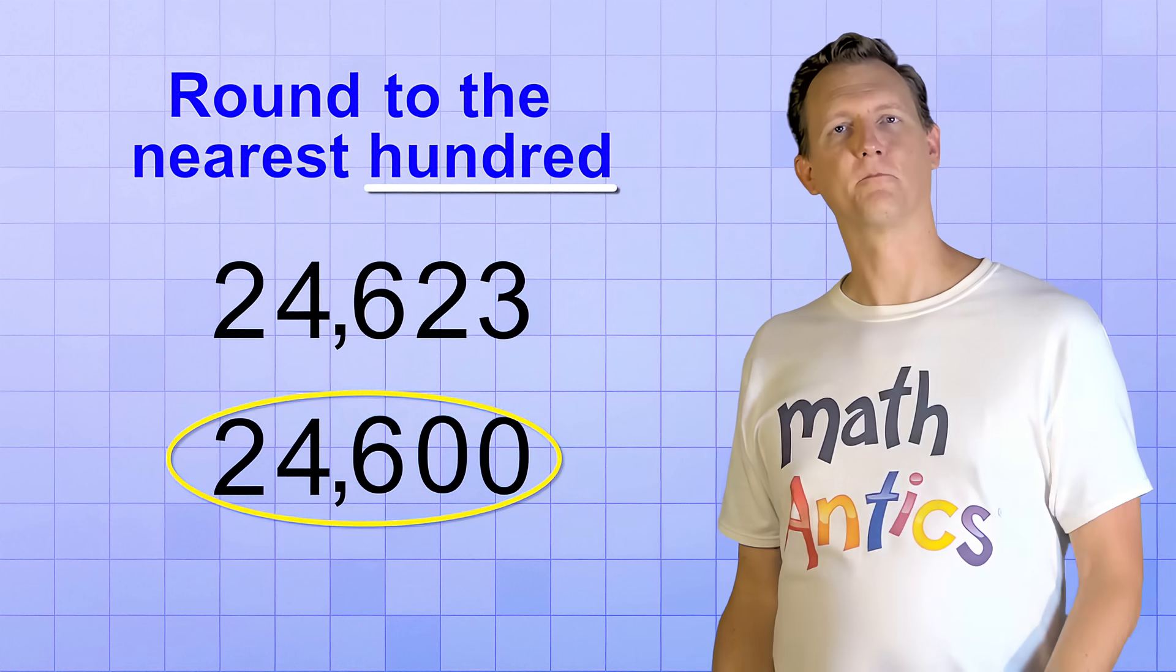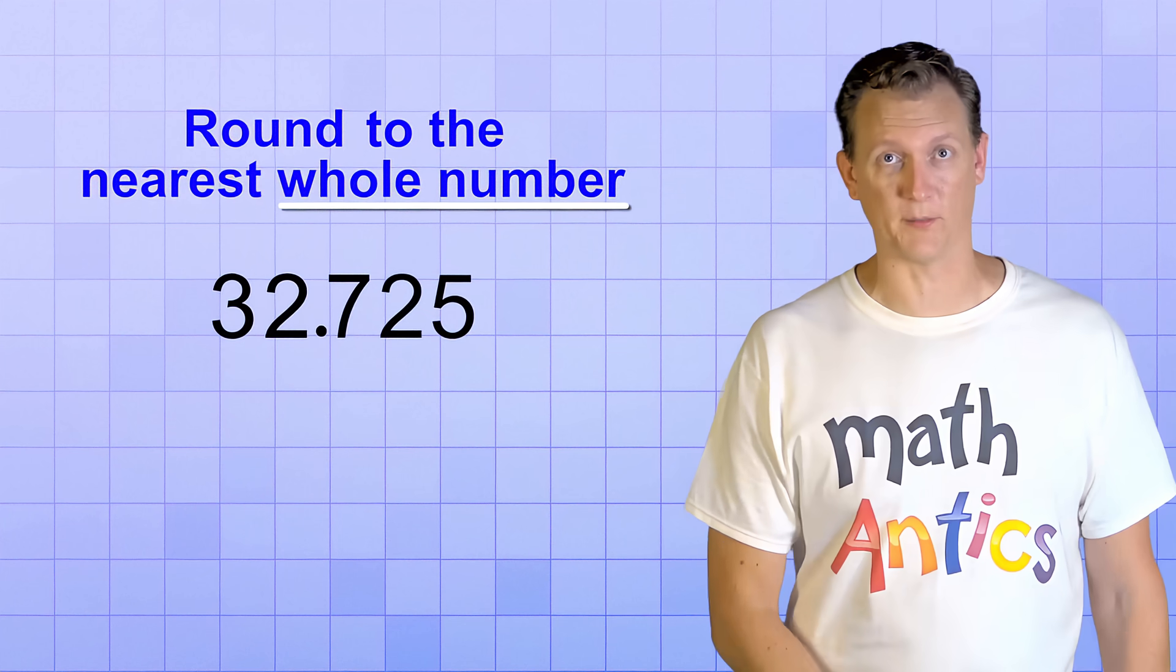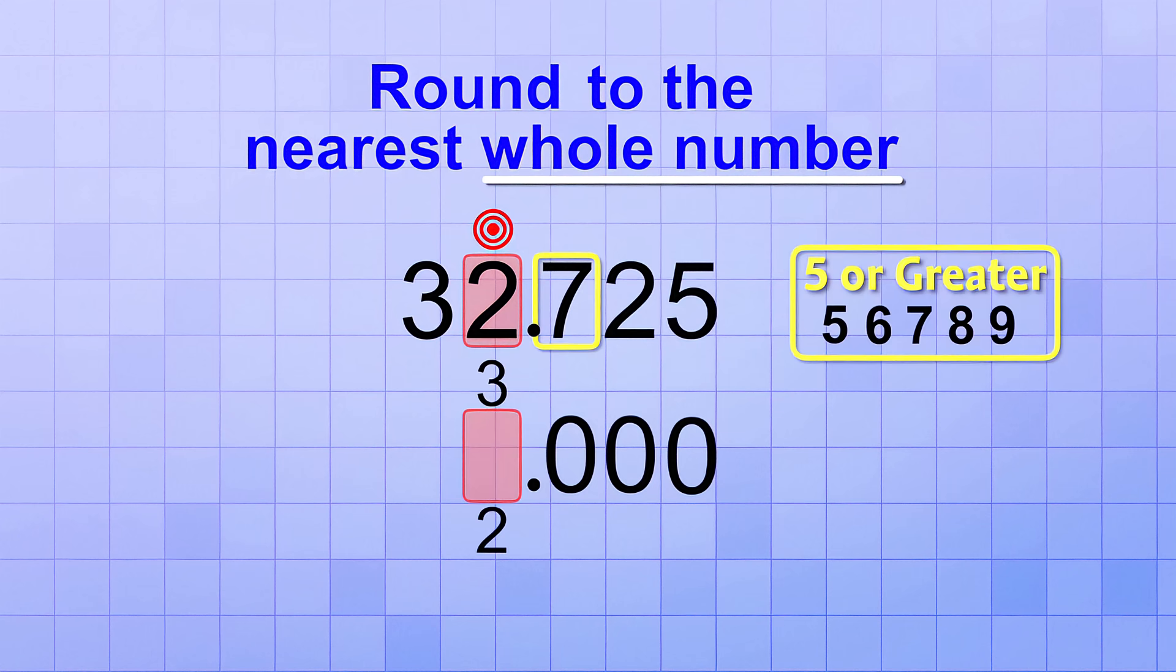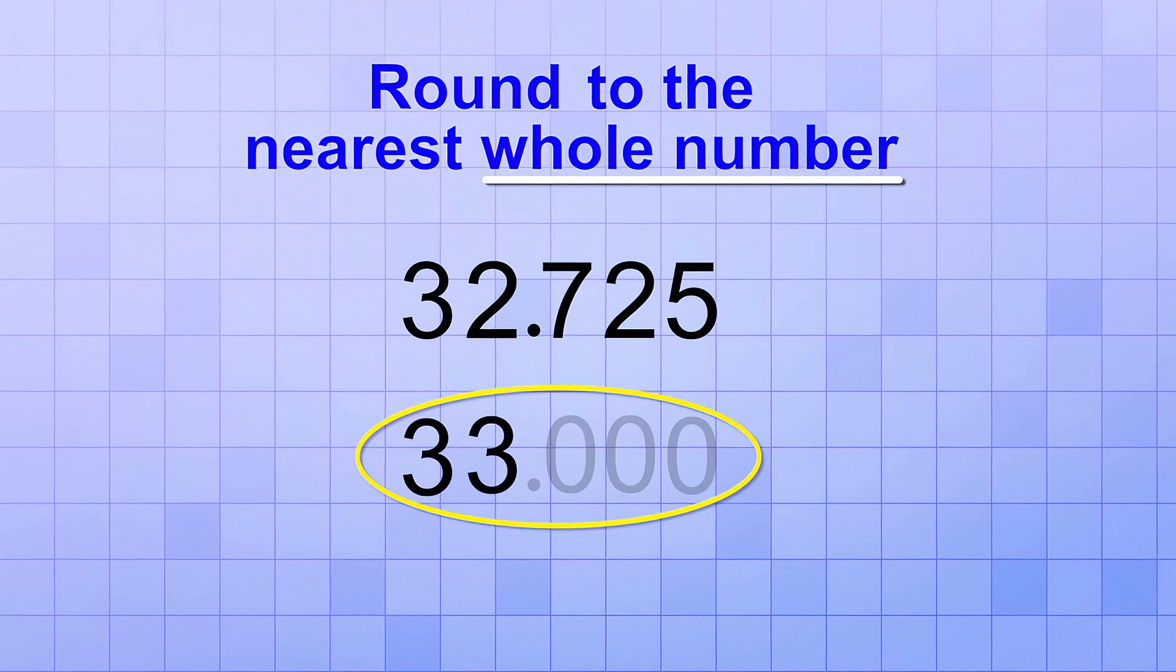Let's try another problem. This one has some decimal digits, 32.725, and we're asked to round it to the nearest whole number. That means our target digit is in the ones place. We need to round it to the nearest one. So any digits to the right of the ones place will just be replaced with zeros in the rounded version. Now, to decide what to do with the target digit, we look at the next digit to the right. Since that digit is a 7, we'll round up this time. That means we'll increase our target digit by 1. And finally, we keep any digits to the left of the target digit the same. In this case, that's just the 3. So we've rounded this number off to 33.000 or just 33 since we don't really need those extra zeros after the decimal point.